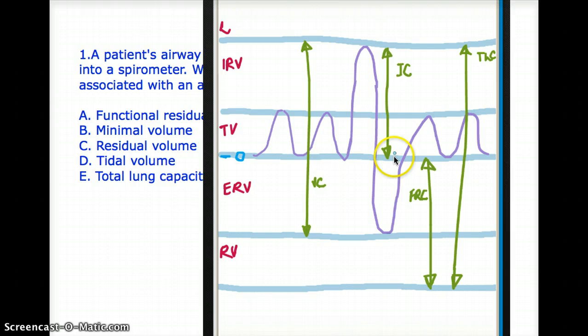Now then we have our tidal volume plus IRV. Together it's making us the inspiratory capacity. And last of all, except the residual volume, if you add all the other volumes you have the vital capacity.